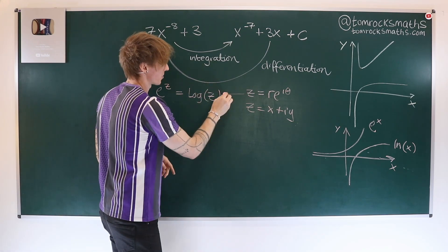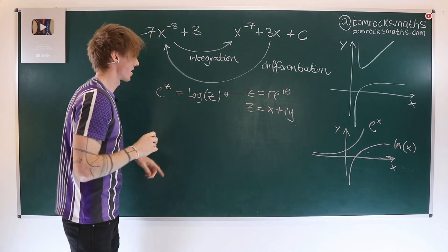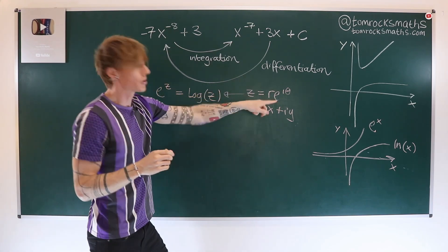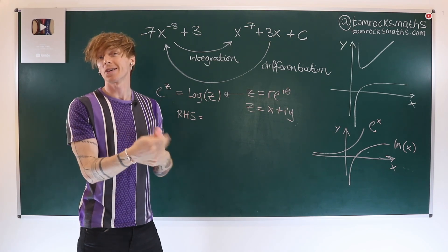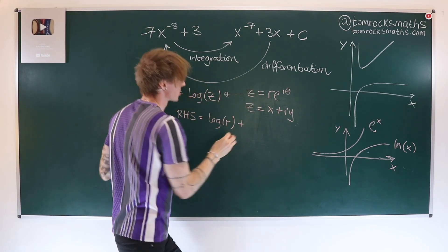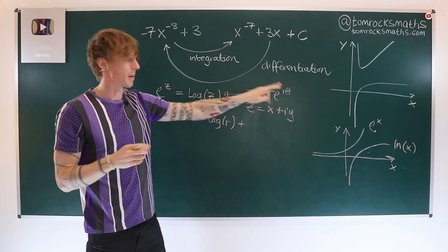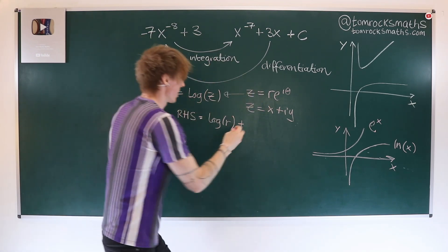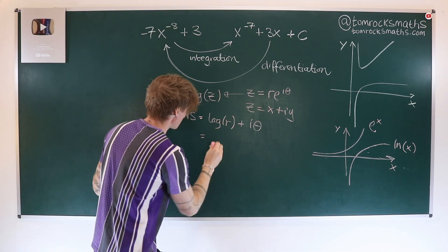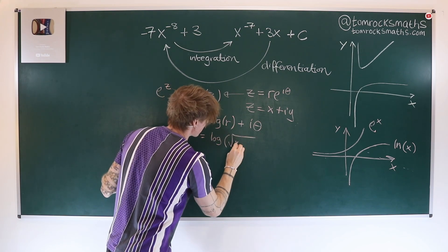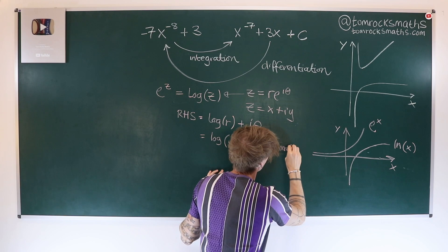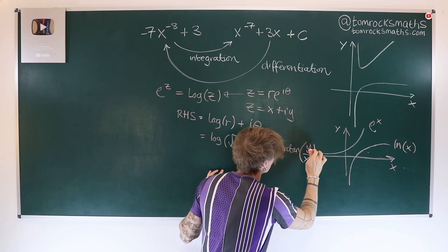Now if we substitute the polar form into the right-hand side, then the right-hand side of this expression is equal to the log of two things — we have the log of a product. The log of a product is a sum of logs, so it becomes log of the first part: we get log r plus log e to the i theta. But log is the inverse function of e, so they cancel and you get log r plus i theta. And if we now rewrite this in terms of x and y, this becomes log of the square root of x squared plus y squared, plus i times arc tan of y divided by x.